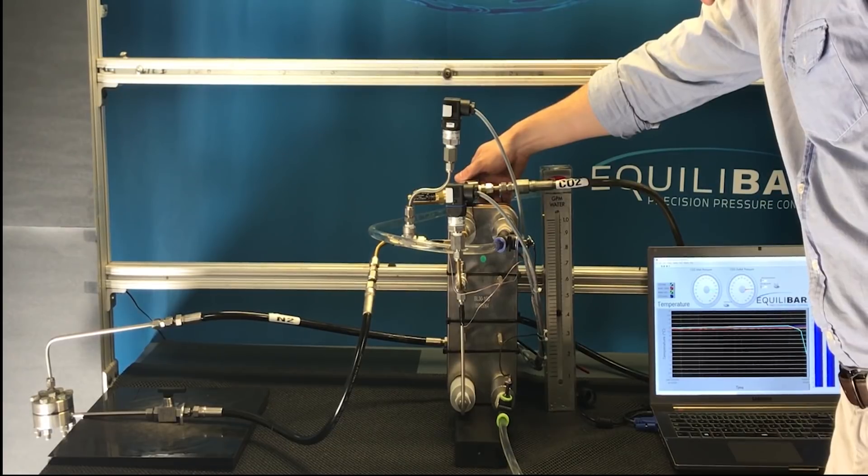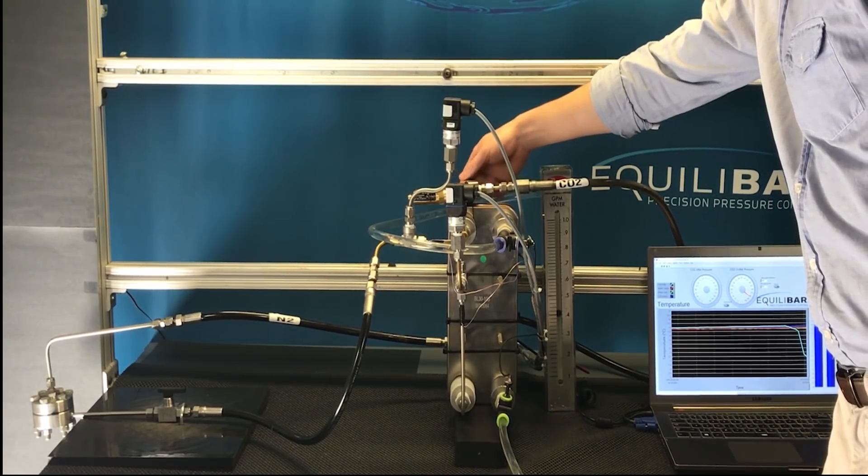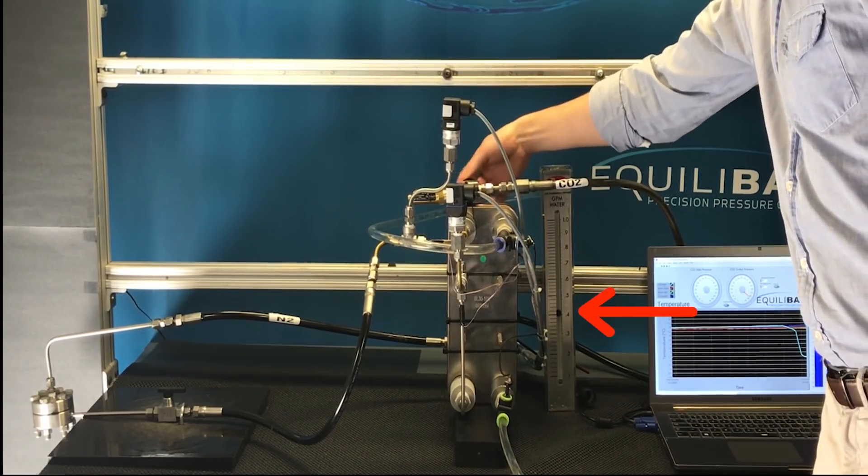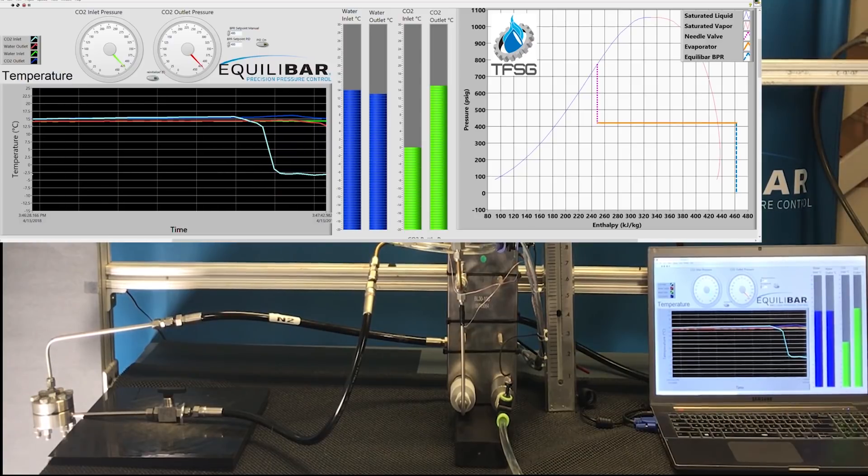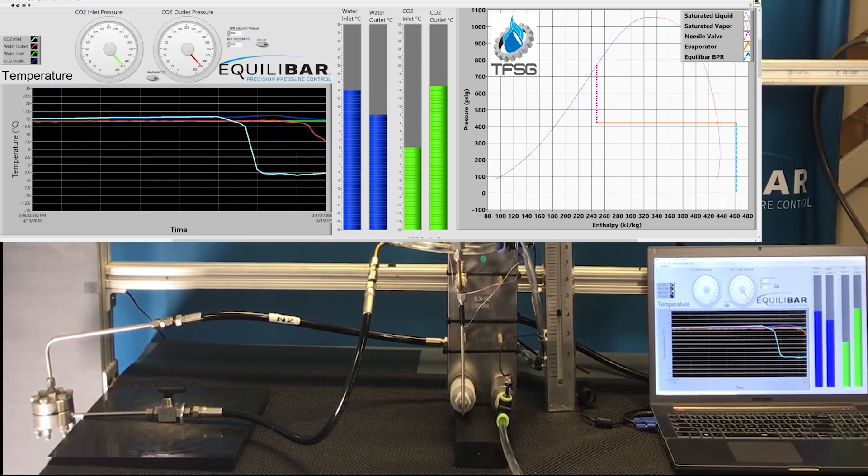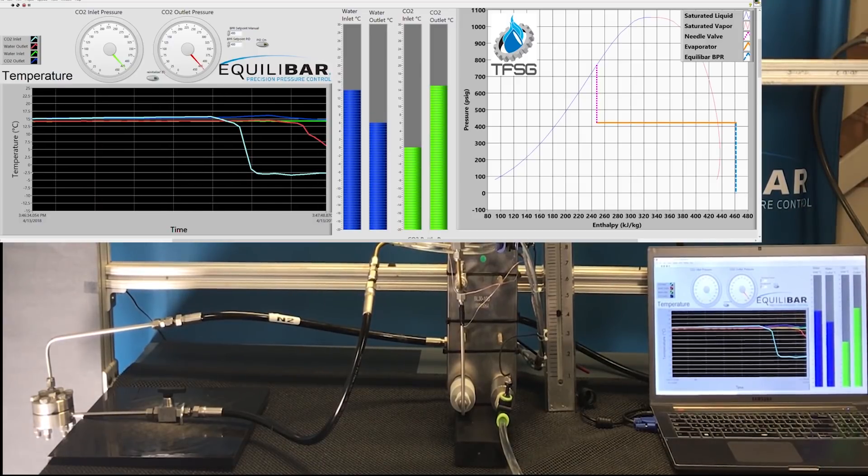I will run the process again but this time the heat load flow rate will be doubled to 0.4 GPM to show how the Equilibar can maintain pressure control with varying heat loads. It is expected during this run that the convergence time will take a little bit longer to reach equilibrium. This convergence time could be used to back calculate the heat transfer rate.